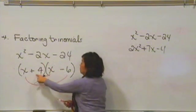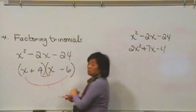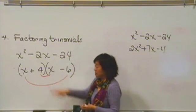And let's just check. 4 times negative 6 is negative 24. So that works out great, and that's how that one factored.